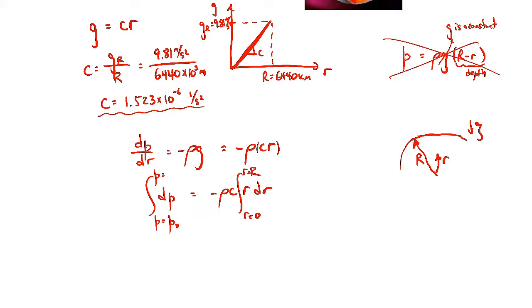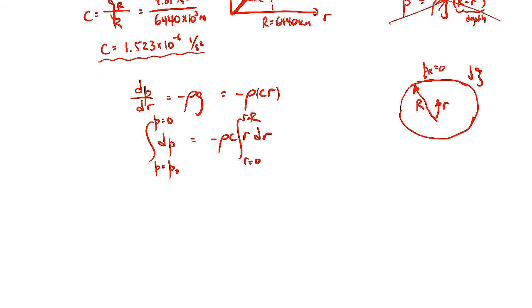If this is our radius capital R there. So this is the earth. That's supposed to be a circle. It's not very good. But this would be p at capital R here. Which we're told we're doing gauge pressure, so we're going to make it zero. Because it's a gauge pressure.